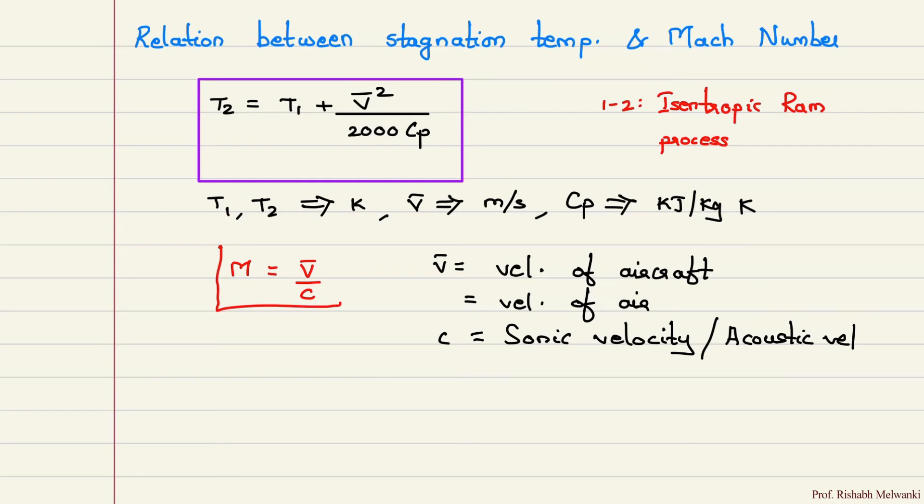So M is called Mach number. If M is given in the question and we want to find T2, how to find that? We need some equation for that. So that equation which we are going to derive with this derivation. We will start with this equation.